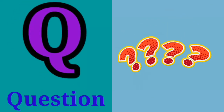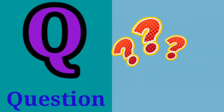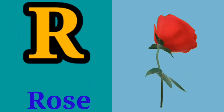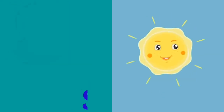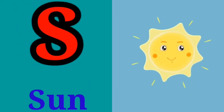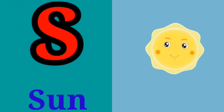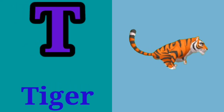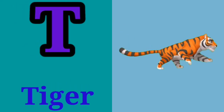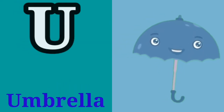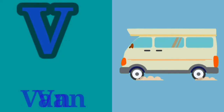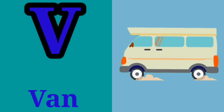Q for question, R for rose, S for sun, T for tiger, U for umbrella, V for when.